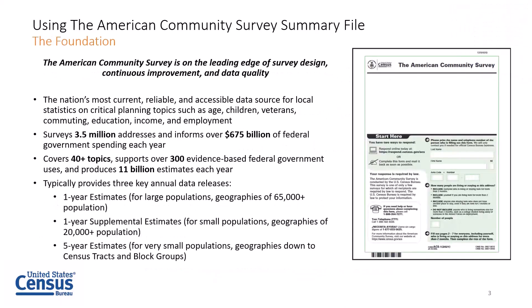Starting off with the basics, the American Community Survey is the nation's most current, reliable, and accessible data source for local statistics on critical planning topics such as age, children, veterans, commuting, education, income, and employment. The ACS samples about three and a half million addresses each year.